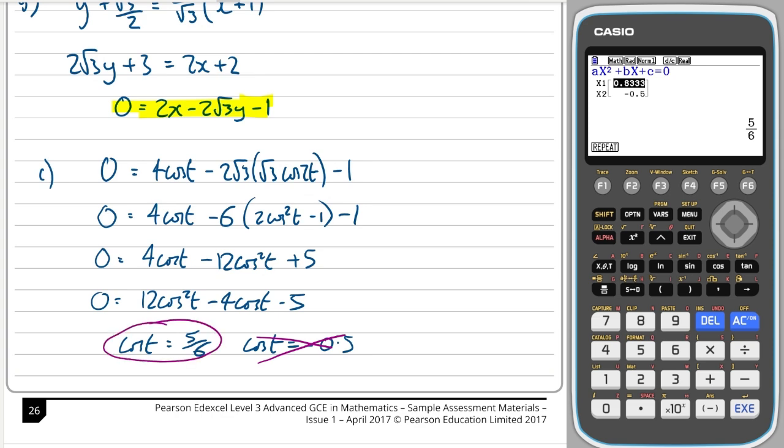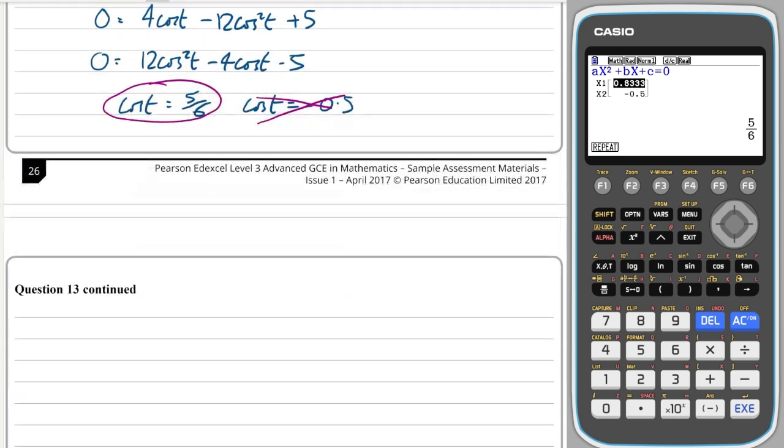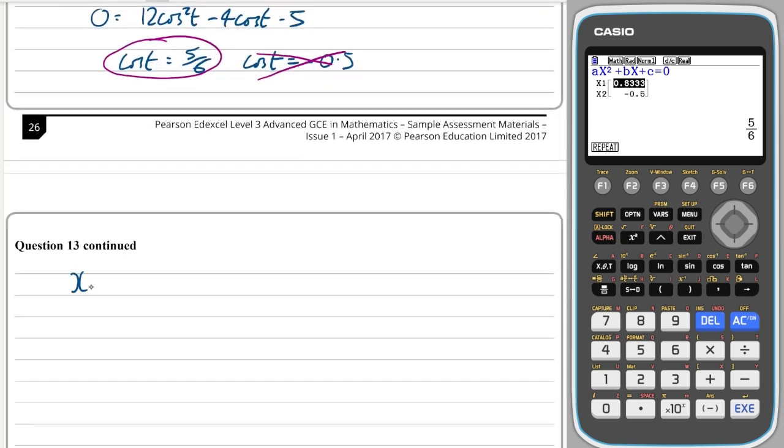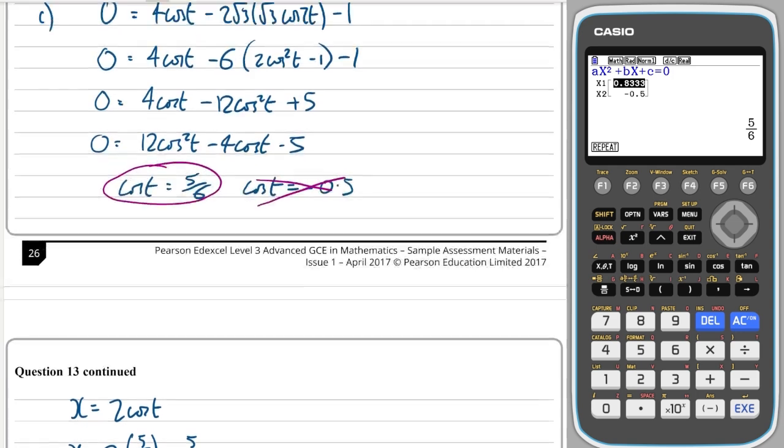I want this one, this is the new point, point Q. What's the x value then? Well we know the x value is 2cos(t), so the x value is 2 times 5/6, which is 5/3. And then what about the y value?